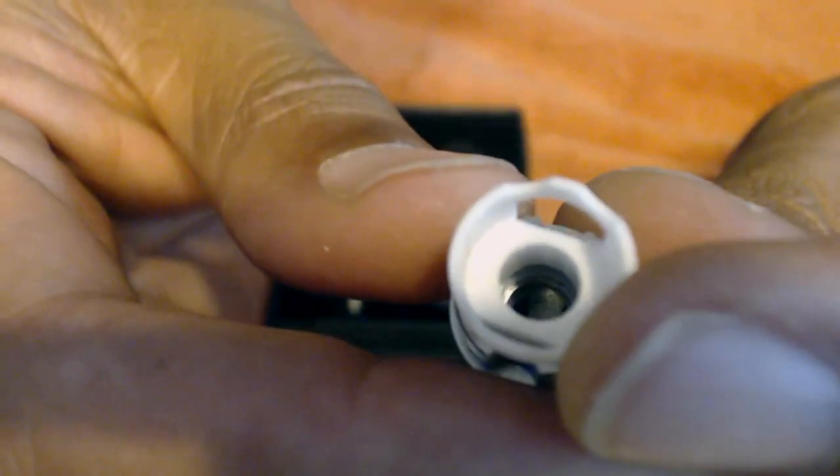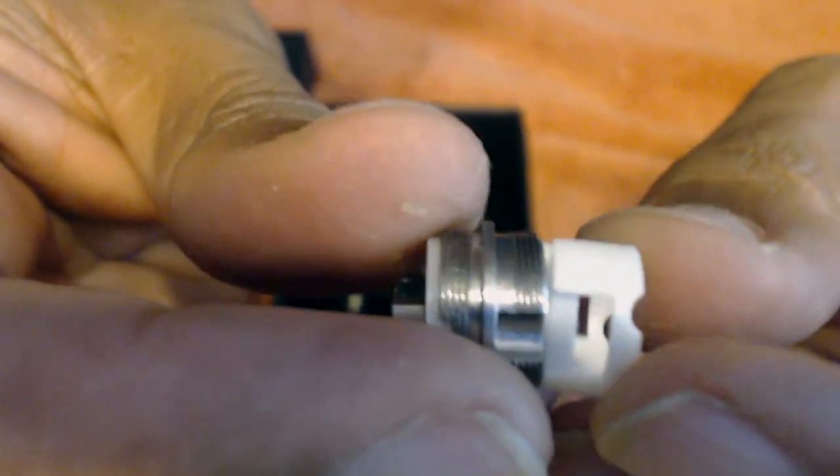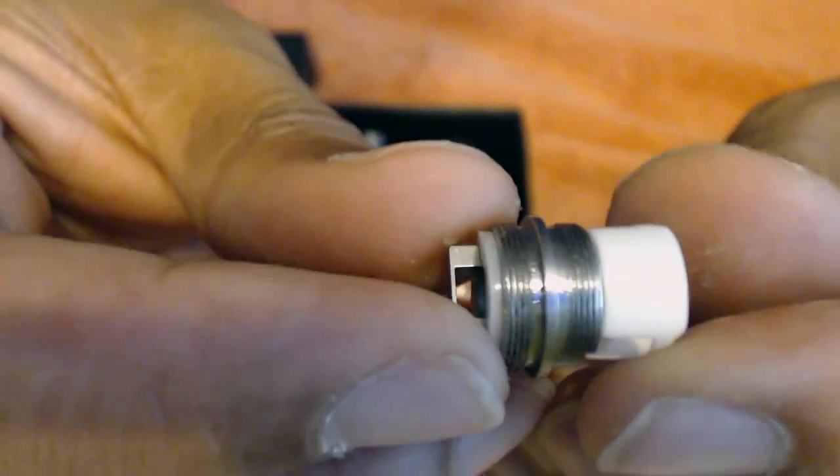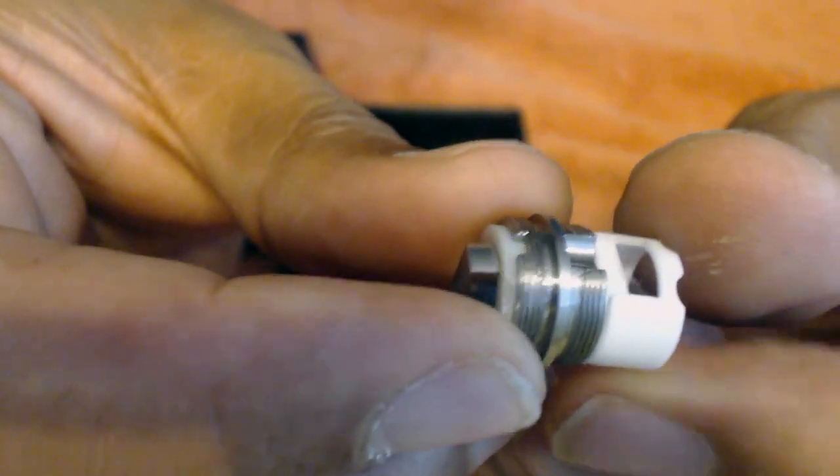So I took apart one of the coil heads. Let's just start with that one. Here it is, all taken apart. Some of you guys that like to build your own coils will like this, because it seems like it's very easy to rebuild. If I can do it, you techie guys can do it.